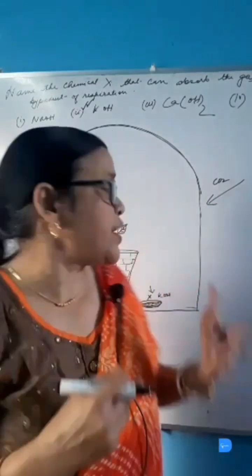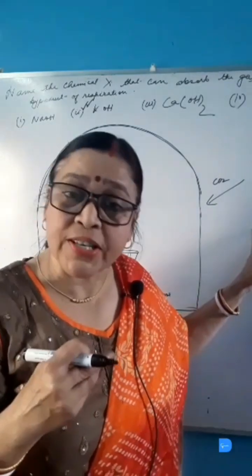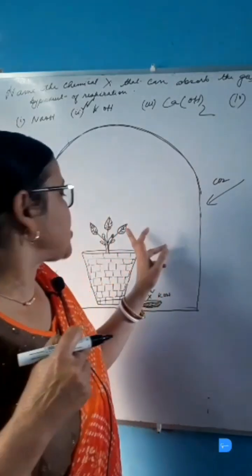There is no carbon dioxide, so photosynthesis has not taken place. As photosynthesis has not taken place, there is no starch formation in this plant.